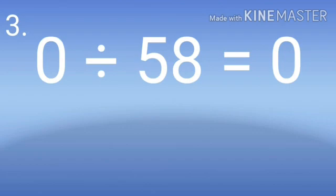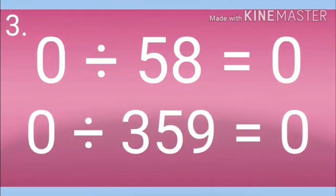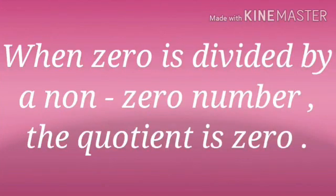When 0 is divided by any non-zero number, we get 0. For example, 0 divided by 58 gives 0, and 0 divided by 359 also gives the dividend 0. So the third property states: when 0 is divided by a non-zero number, the quotient is 0.